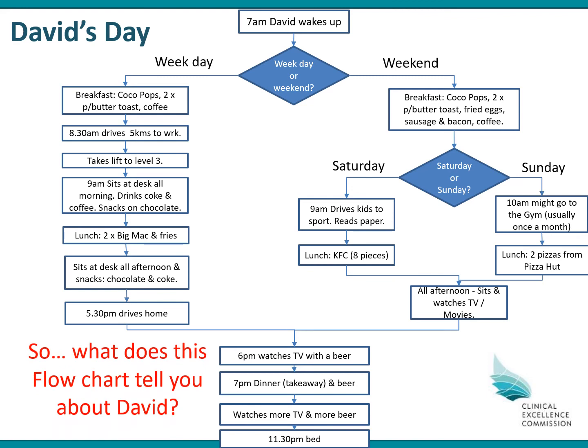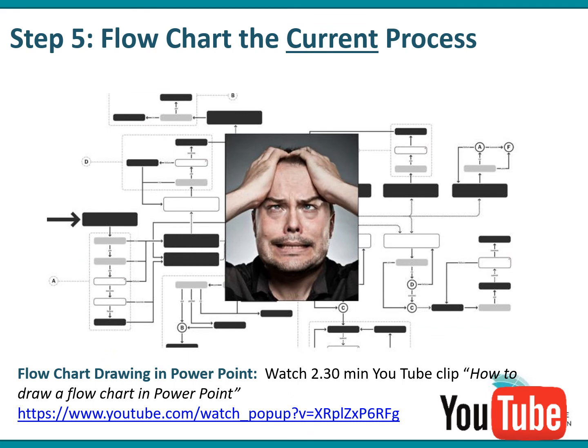So what does this flowchart tell us about David? If we hadn't done it, we wouldn't know much about him. But now we understand that basically he eats a lot and doesn't do much exercise — those are the two main players. After you've done your flowchart on butcher's paper, you might want to put it into software like PowerPoint so it looks neat. To learn how to flowchart using PowerPoint, watch the short two-and-a-half minute YouTube clip about using PowerPoint to draw a flowchart.